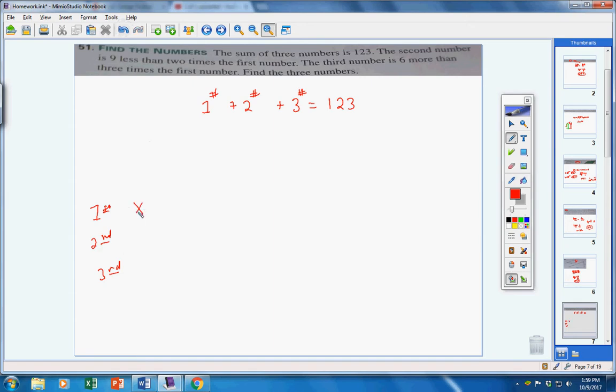Here's what I'm going to do. I'm going to put the first number, the second number, third number. Because this number here and this number here are both based on the first number, I'm going to call my first number x. My second number is 9 less than 2 times the first. So, 9 less, take away 9, 2 times the first. What is my first? x. So, 2 times x minus 9. The third number is 6 more than 3 times the first. So for my first number, I put x plus my second number, I put 2x minus 9, plus, for my third number, I'm going to put 3x plus 6. And that should give me 123.